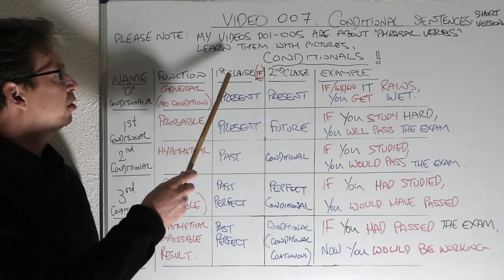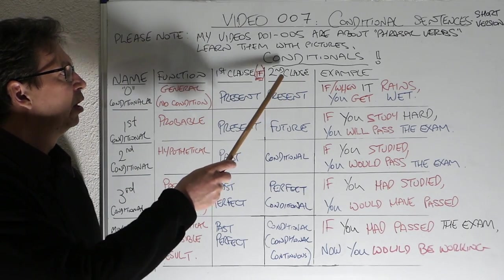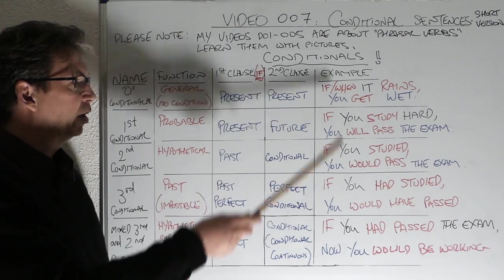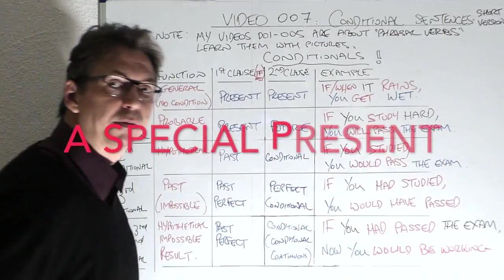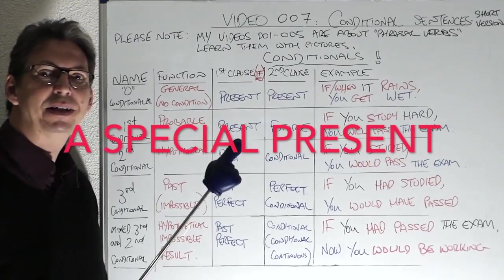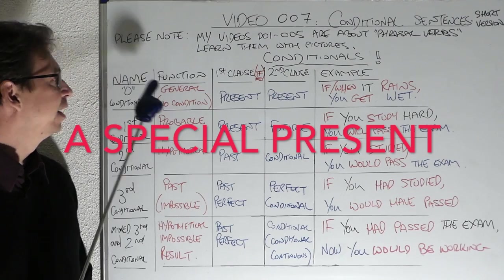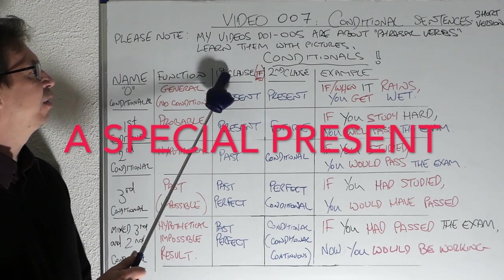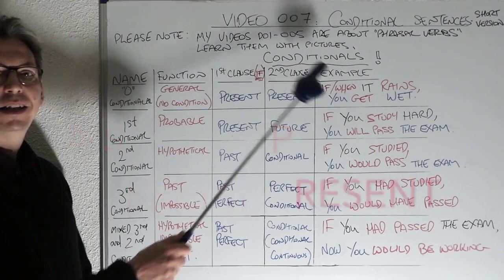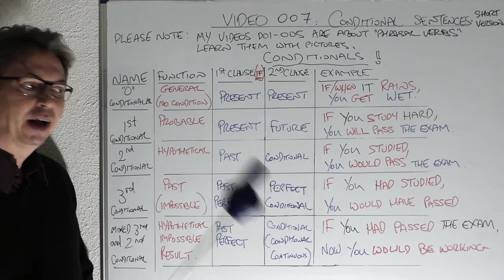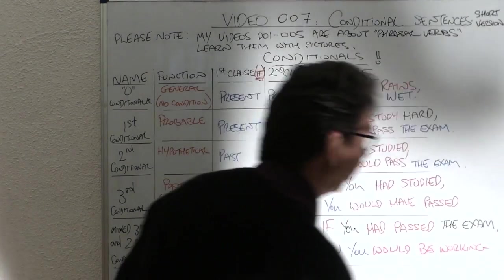Again we have the name, the function, the first clause which is the if clause, the second clause which is the result, and the example. One of my children has given me this so I will use it. The name, the function, the first clause with the if, the second clause and the example. I will go back now to using the normal one.